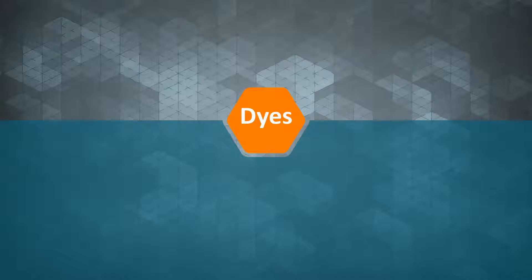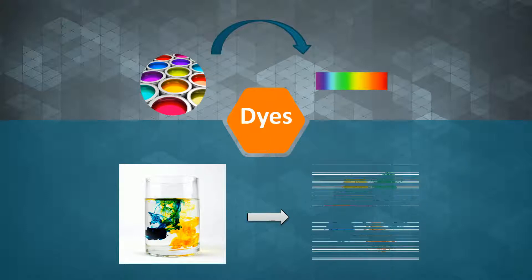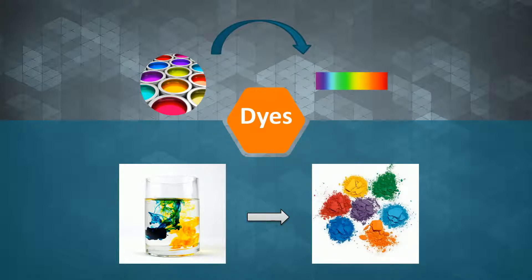Dyes are colored materials because they absorb only certain wavelengths of visible light and have an affinity to the substrate they are used on. Dyes are generally soluble in water, and some dyes can be made insoluble by adding salts to produce lake pigments. Dyes are classified according to their solubility and chemical properties.